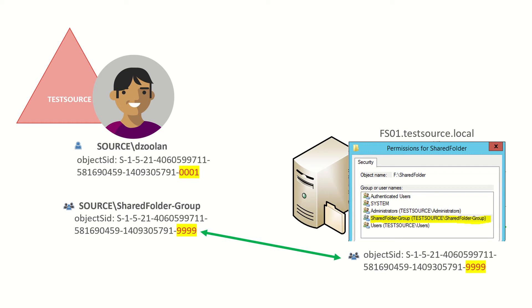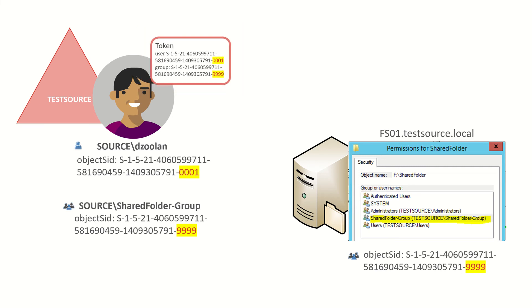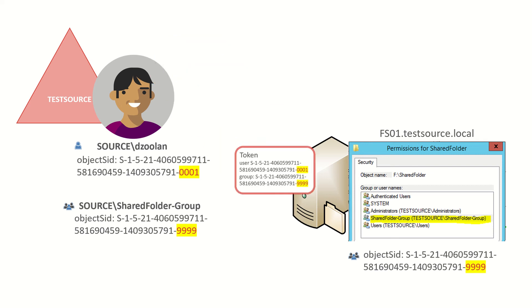Here's a high level view of how Derek gets access to this folder. When he logs onto his machine and authenticates to AD, he obtains an access token. That access token is populated with his user object SID and all of the SIDs for all of the groups he belongs to. When he attempts to access the folder, he presents his access token to the server, which will then compare the SIDs in Derek's token against the list of SIDs in its permissions list. If there is a match and permission is set to allow, Derek can access the files.